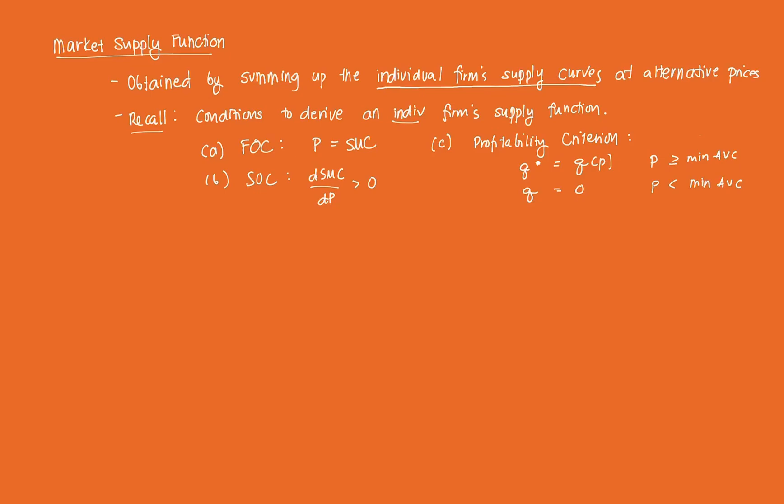This function is obtained by summing up all the individual firm's supply curves at alternative prices. Recall first that in order to derive the individual firm's supply function, we needed to satisfy three things.